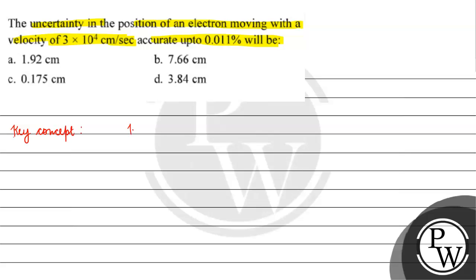The key concept for this question is Heisenberg's Uncertainty Principle. It basically states that it is not possible to calculate the exact position and momentum simultaneously — it is not possible to find out the exact values for position and momentum of an electron.